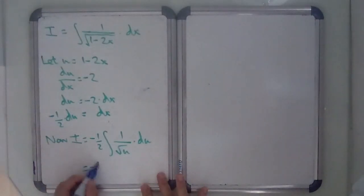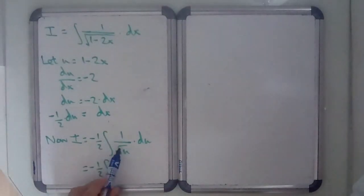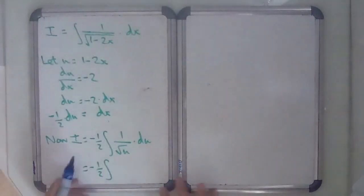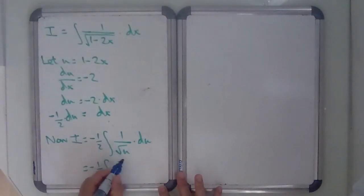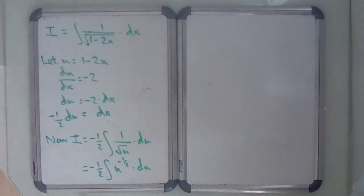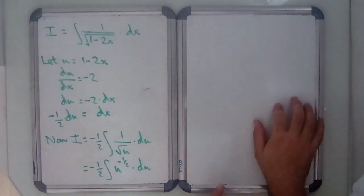So equals minus 1 half times the integral of, so to get this in, to use polynomial rules on it, I want to write this in index form. So that is u to the power minus 1 half du with respect to u. So now you've got the integral in a position where you can integrate using the power rule.